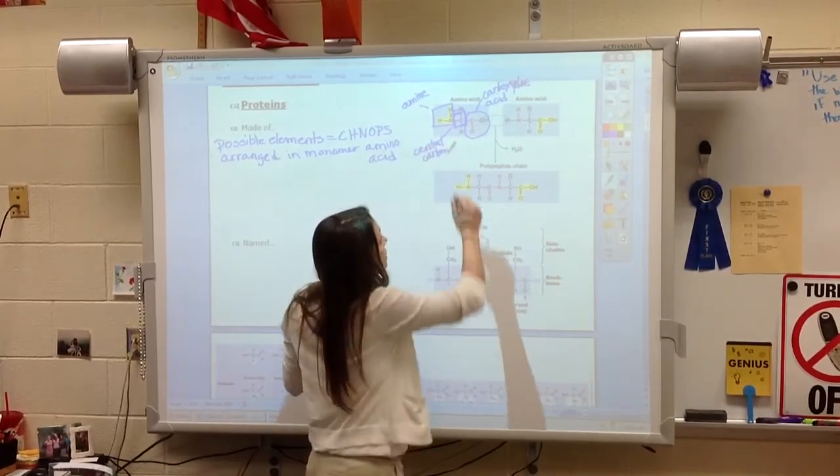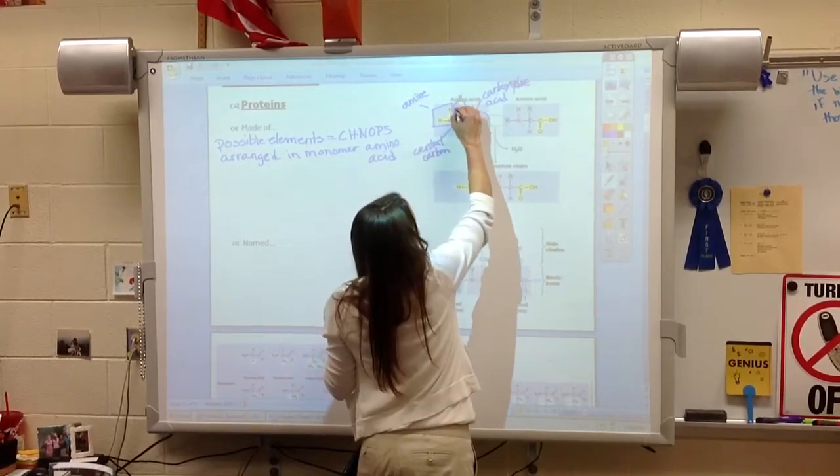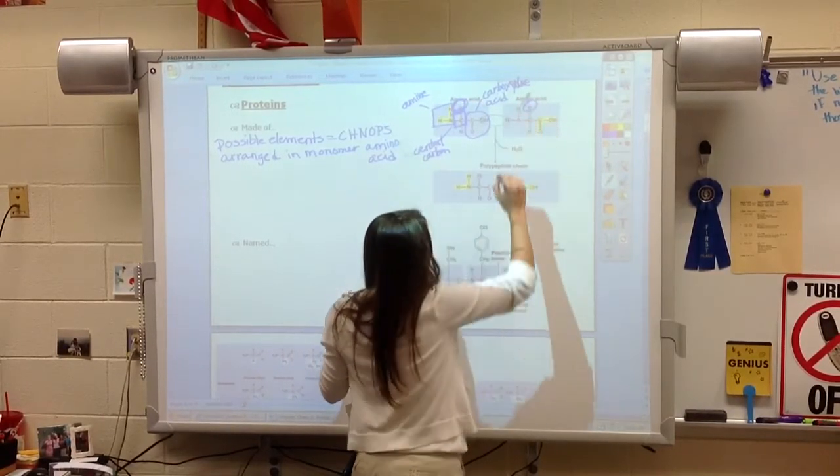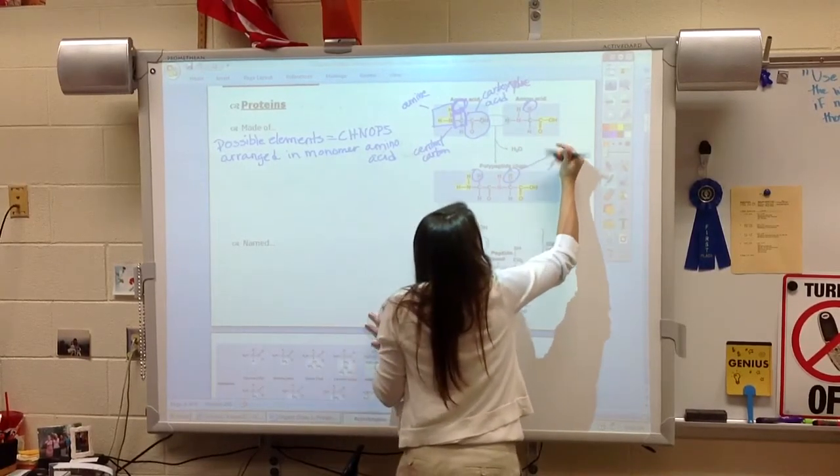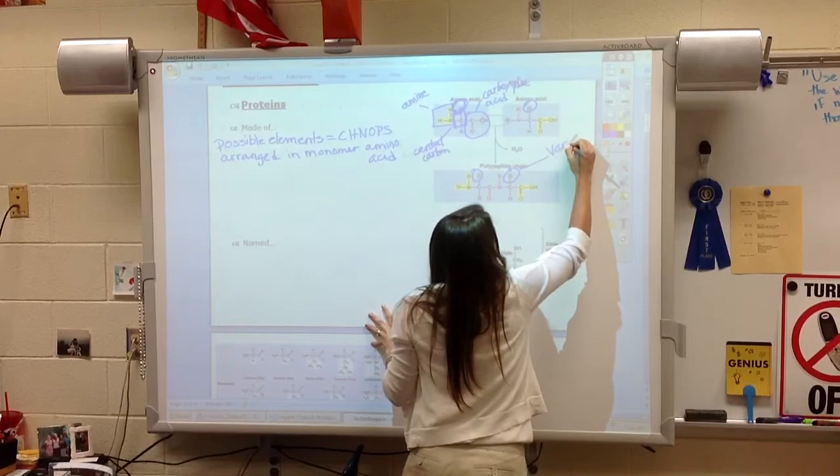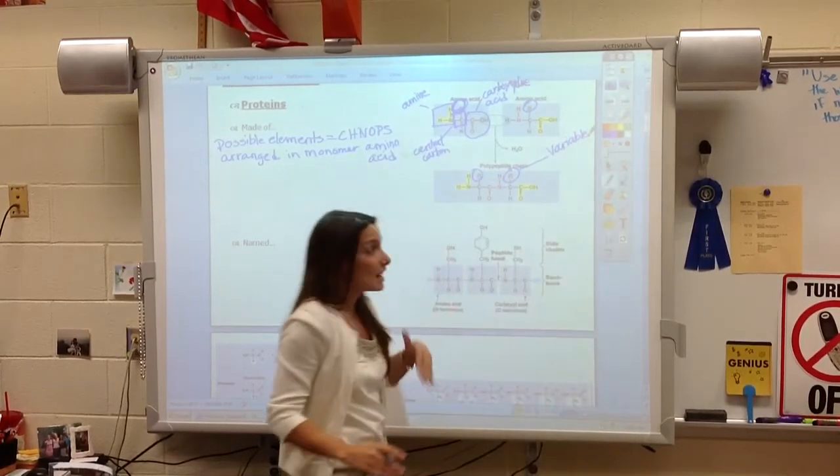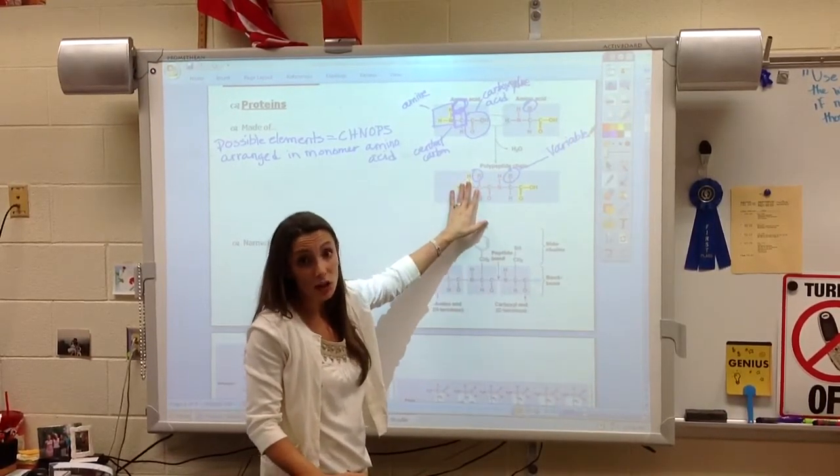Then you're going to want to focus on this R. I've covered it up here, but you can see this R. The R actually just represents a variable side chain. Meaning anything could actually go here.